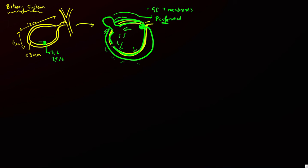Another complication is emphysematous cholecystitis, caused by superinfection with gas-forming organisms. You'll see air within the wall of the gallbladder, and sometimes within the lumen as well. This is a very aggressive form of infection that requires immediate surgical therapy.